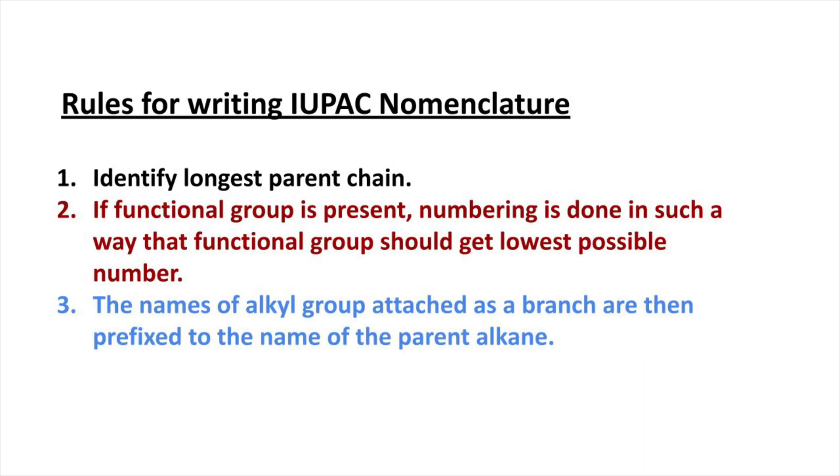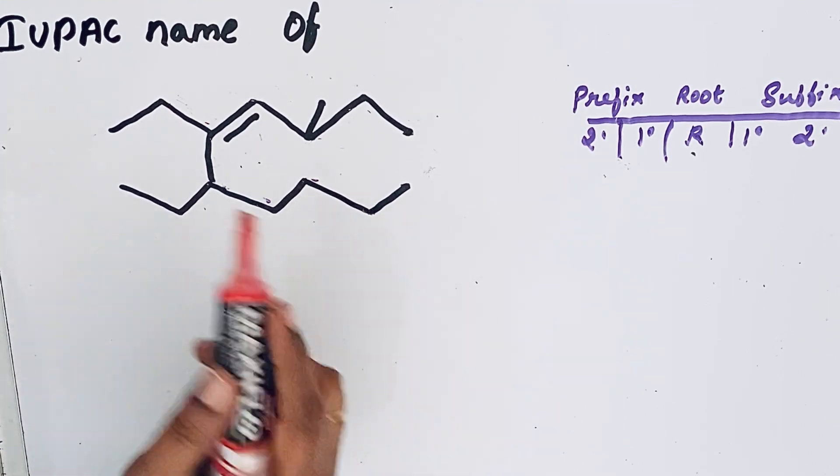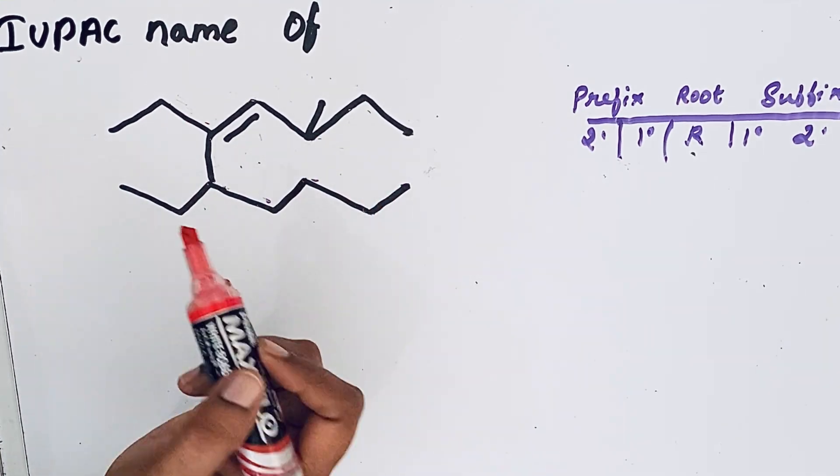According to IUPAC rule we should give reference for the longest parent chain. Also if the longest parent chain contains a functional group, the functional group should get the lowest possible number. So we can give numbering for this compound from left to right or right to left.